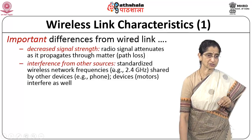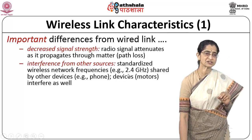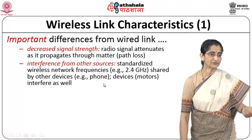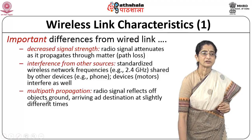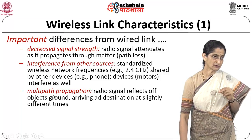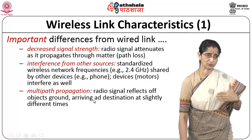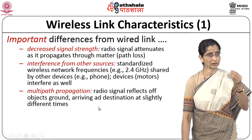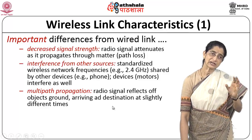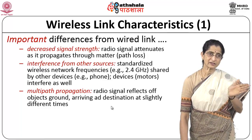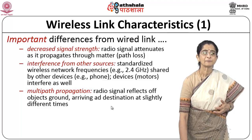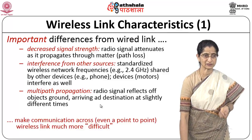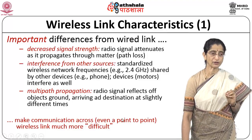There can also be interference from other sources. Standardized wireless frequencies, like 2.4 GHz, are shared by other devices such as phones and motors, which could interfere with transmission at that frequency band. Another problem is multipath propagation: radio signals reflect off various surfaces and objects, arriving at the destination at slightly different times. When these reflected signals combine, they create a noisy signal with significant interference from reflected waves, making communication even for point-to-point wireless links much more difficult.